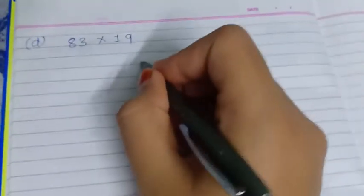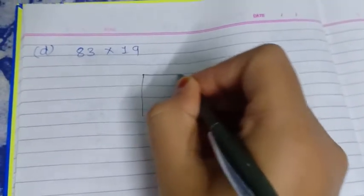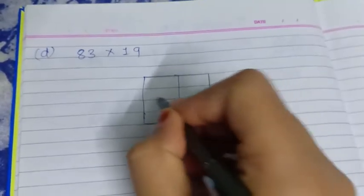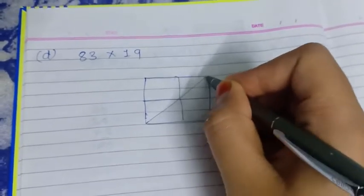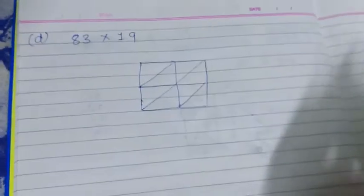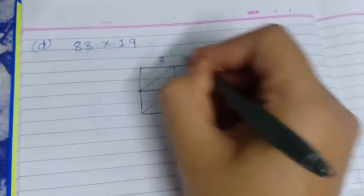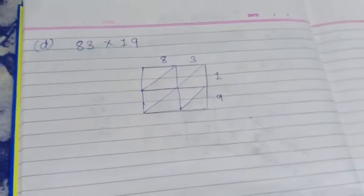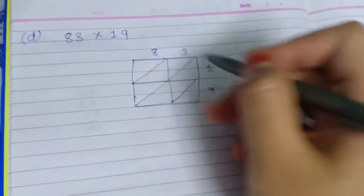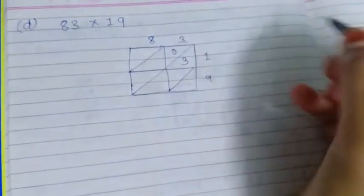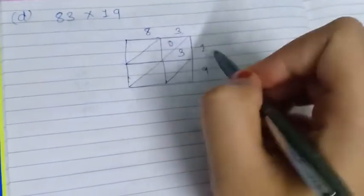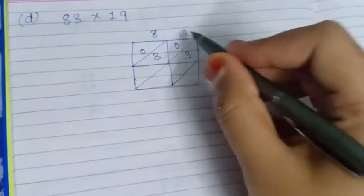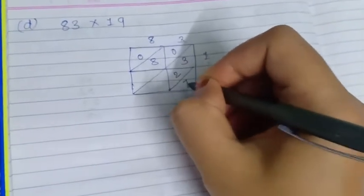Next, solve (d): 83 × 19. Make a box and place 8 and 3 on top, 1 and 9 on the side. Start the multiplication: 3 × 1 = 3, write 0 and 3. 8 × 1 = 8, write 0 and 8. 9 × 3 = 27, so write 2 and 7.